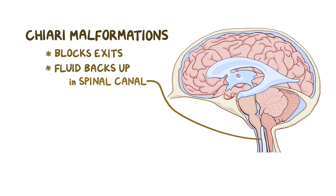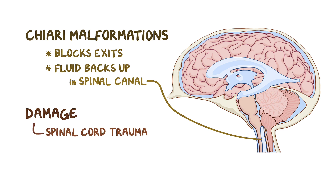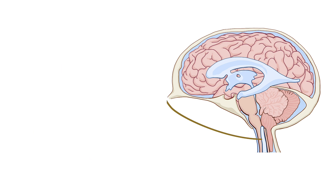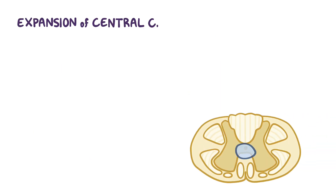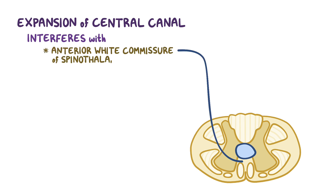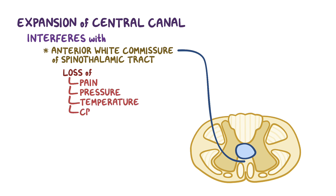Aside from Chiari malformations, syringomyelia can also be caused by any acquired condition that blocks the flow of cerebrospinal fluid, like a tumor. Alternatively, it can be caused by damage to the spinal cord which results in an enlarged spinal canal. Examples of that include spinal cord trauma, spinal tumors, and spinal cord abscess. Regardless of the cause, the expansion of the central canal in syringomyelia interferes with the fibers within the anterior white commissure of the spinothalamic tract, leading to the loss of pain, pressure, temperature, and crude touch.